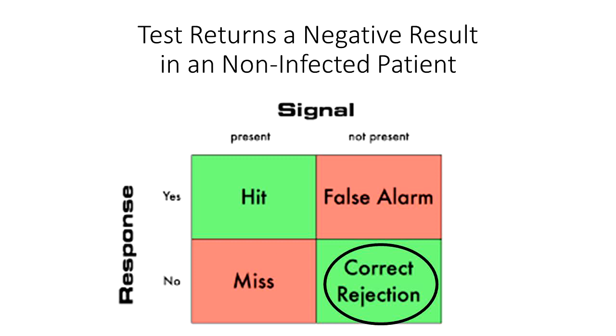Next, we have a negative result in somebody who has not been infected, has not had an infection, so they have no antibodies. That would be a correct rejection. This individual does not have antibodies, and the test says they don't have antibodies.